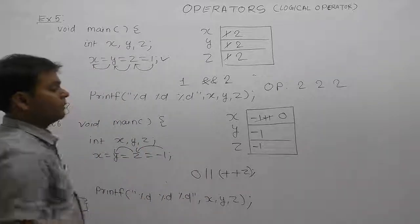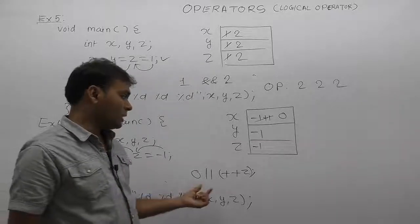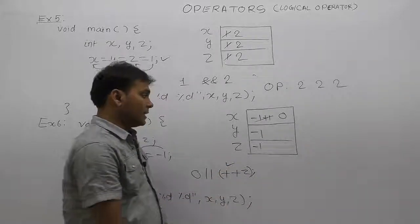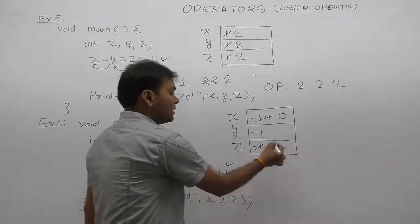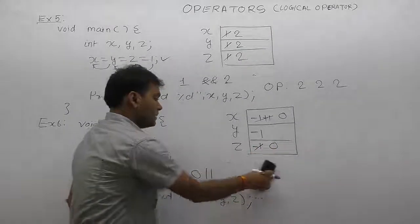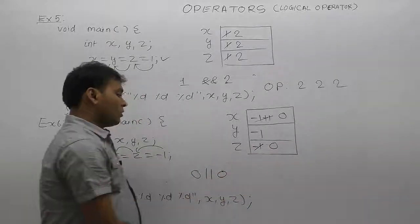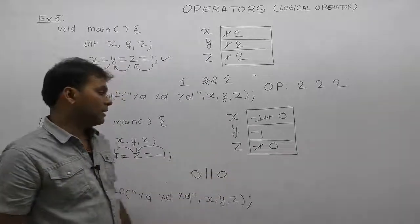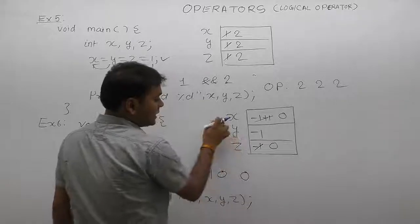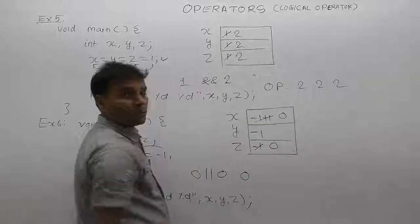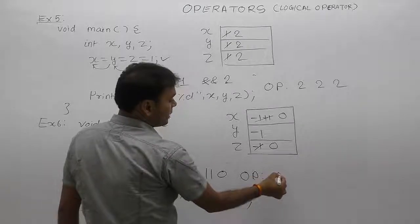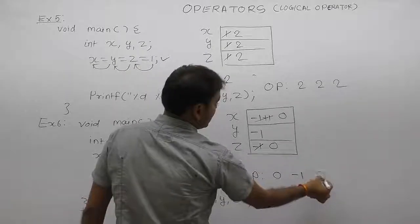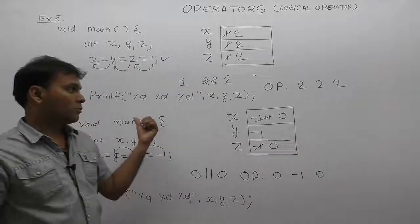For the OR case, the first condition is false, so the second condition is tested. According to pre-increment, ++z increments z by one — minus one plus one becomes zero. The incremented value of z, which is zero, is replaced. The overall result is false. Importantly, y was never incremented. Therefore, the output is: value of x is zero, value of y is minus one, and value of z is zero.